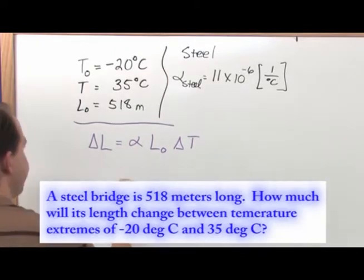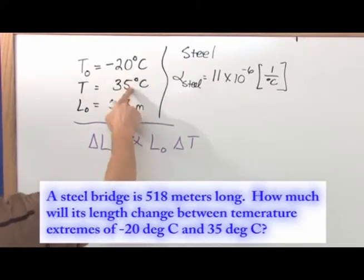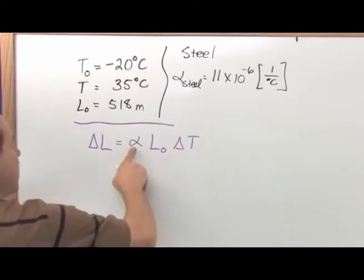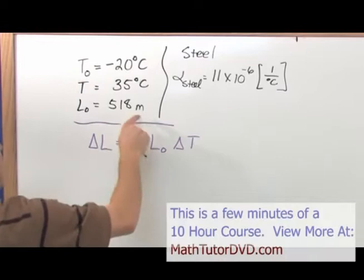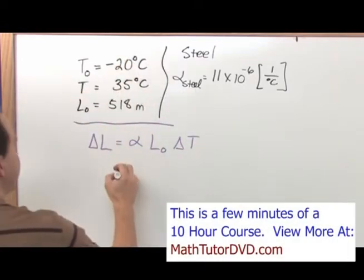Now in this case, the temperature change is something that we need to calculate because we're going to use this here. But we know what alpha is, we know what the coefficient of expansion is, we know what the initial length is, so let's go ahead and find out what delta T is before we proceed.